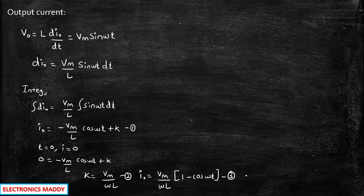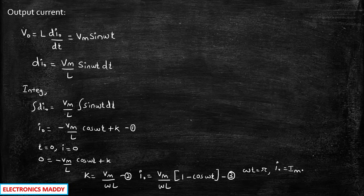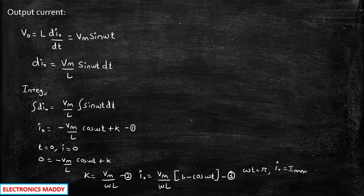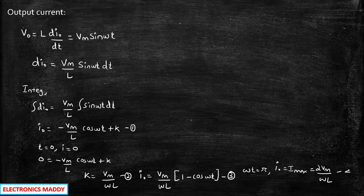Now, what happens when ωt = π? i_out will be equal to i_max. Because in this expression, cos(π) = cos(180°) = −1, so minus of minus 1 gives 2. Therefore i_max = 2Vm/ωL. This is the maximum value — expression number 4.